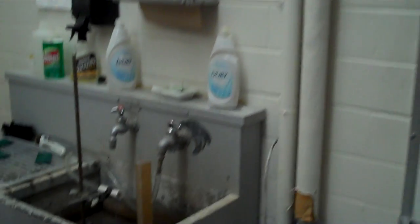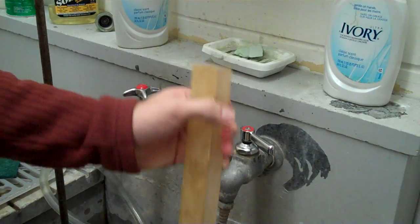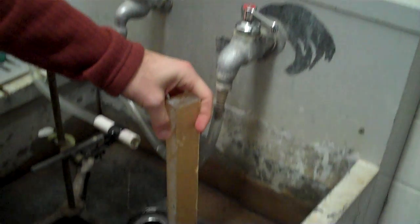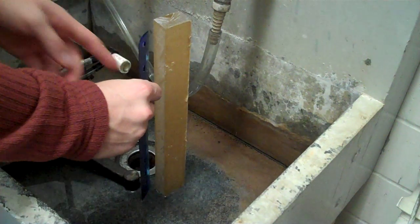In order to conduct this experiment, we will first weigh the block, then place it in the sink and use a ruler to measure the height at which the jet of water is hitting the block.